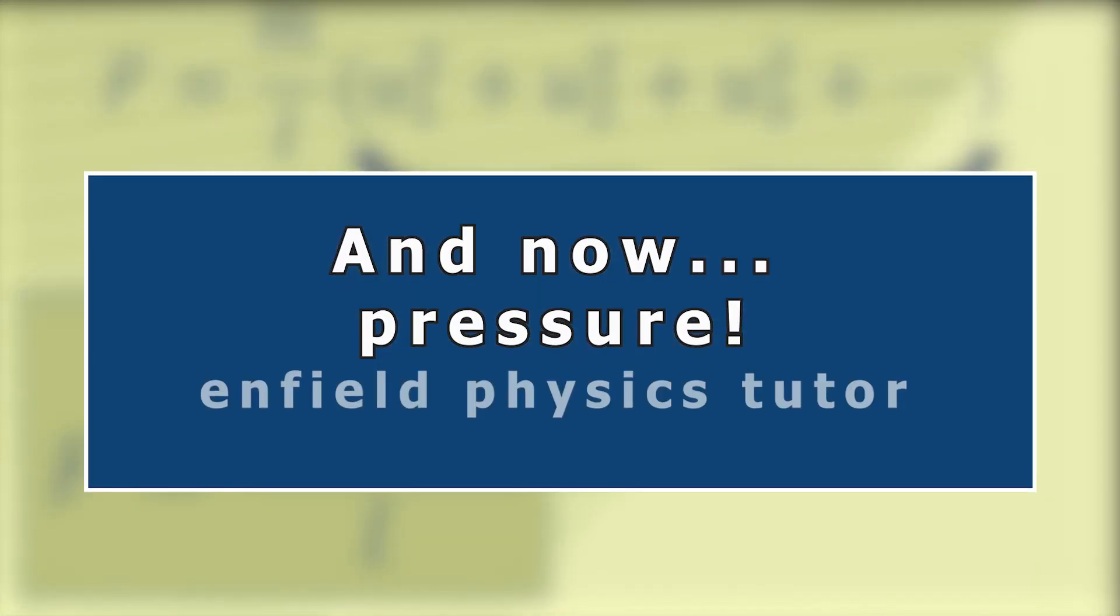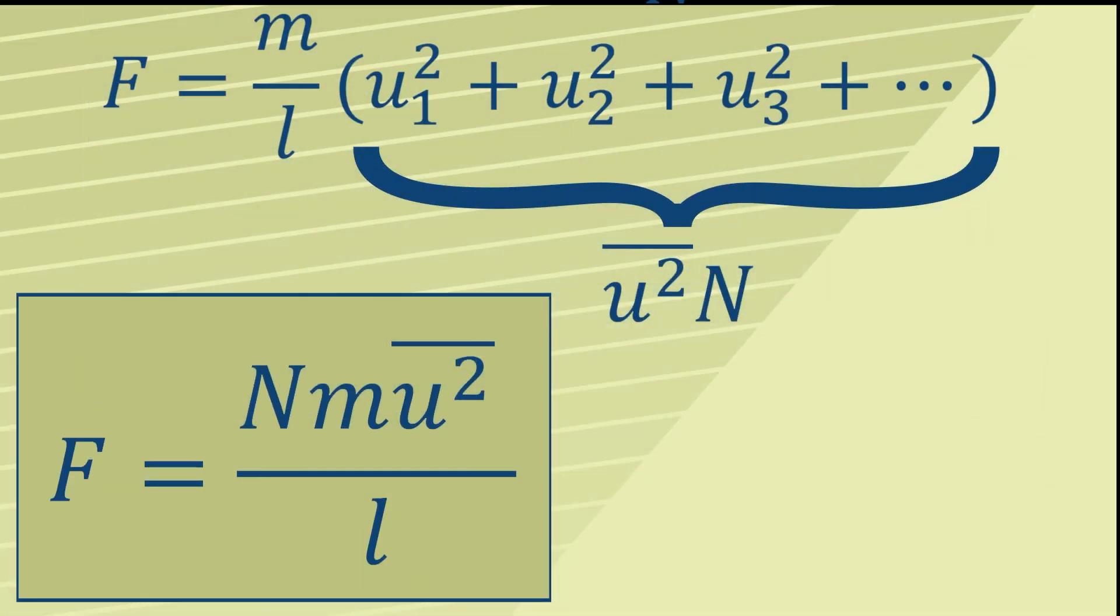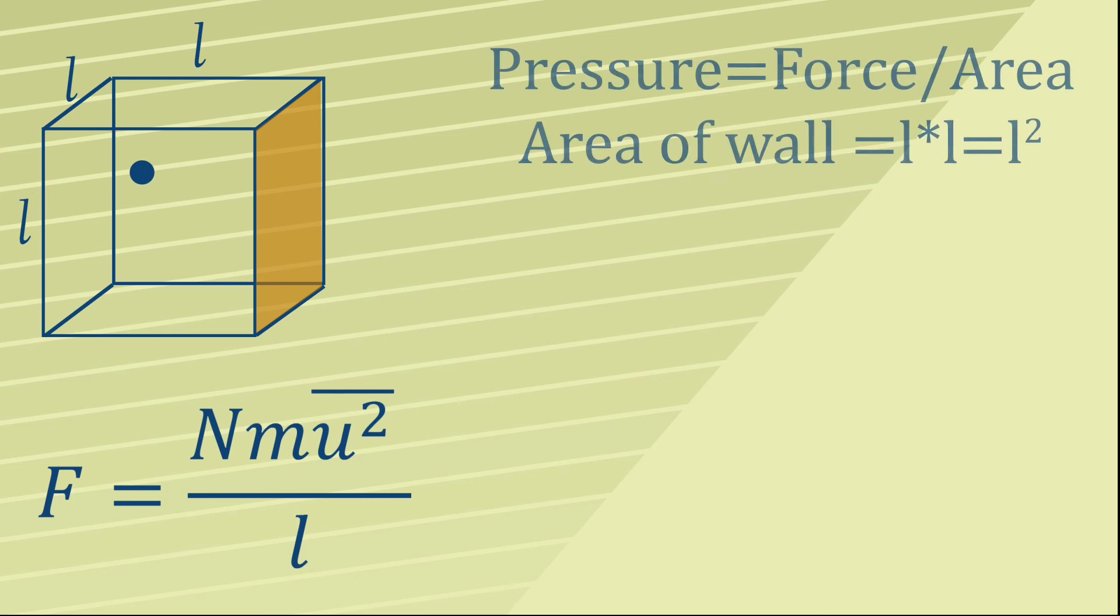In case you can't remember, what we're trying to do here is get a formula for pressure, and we have one for force. But pressure is equal to force divided by the area, and given that we have a cube here, the area of the orange face is simply L times L, or L squared.